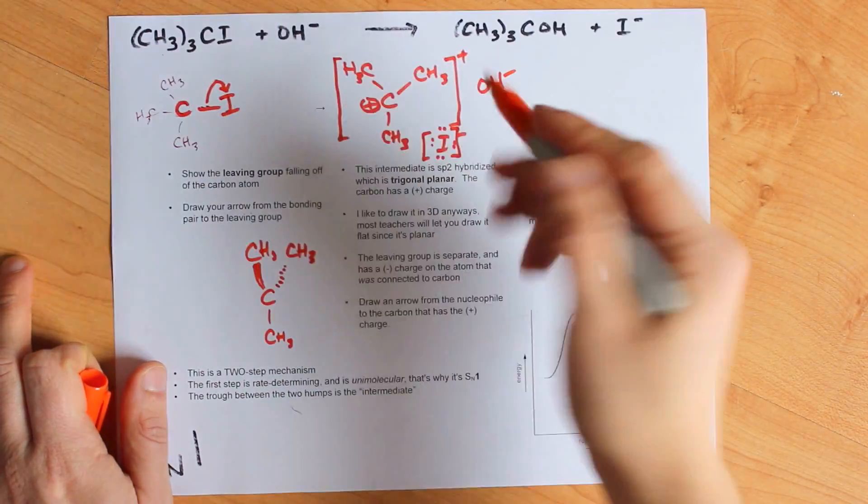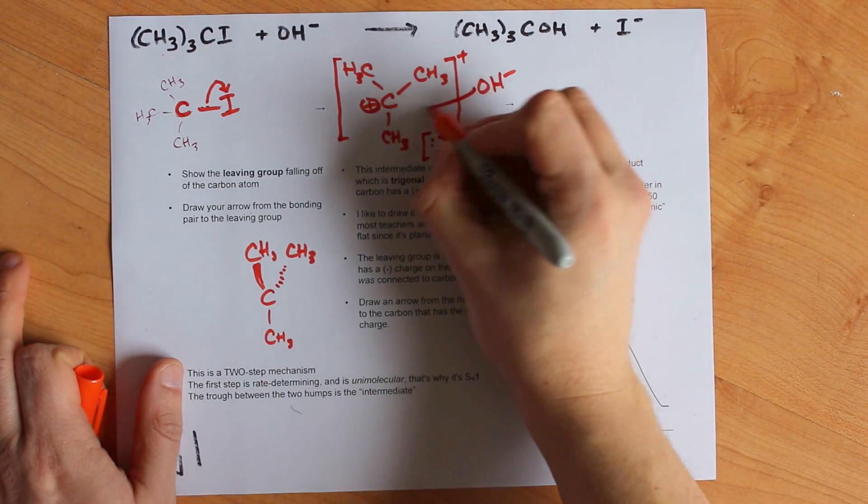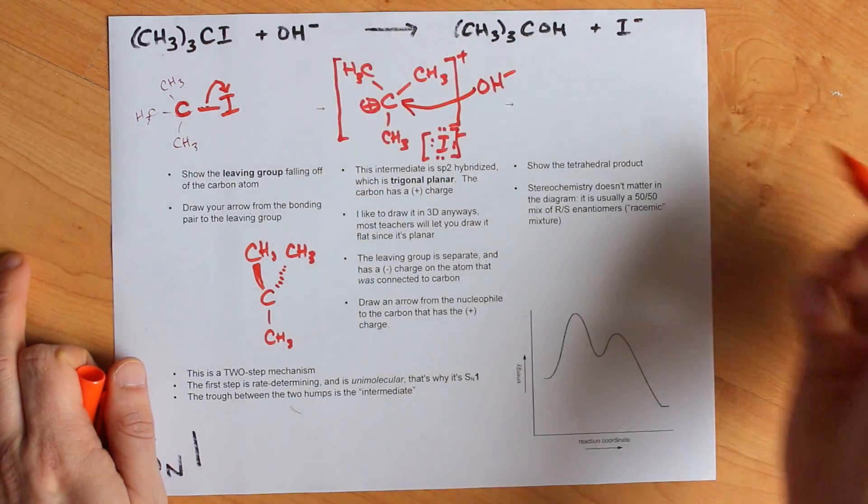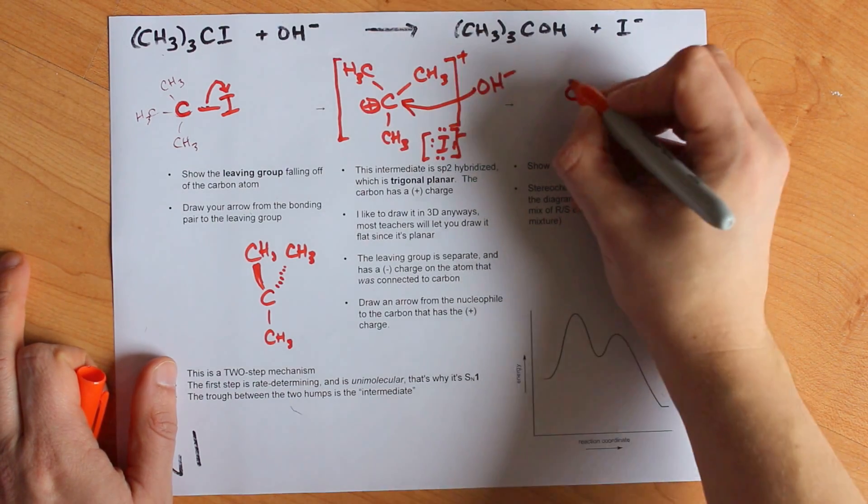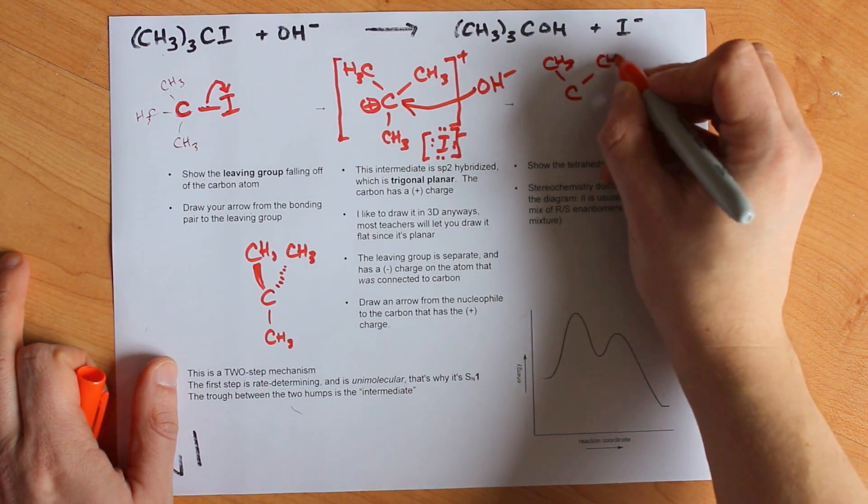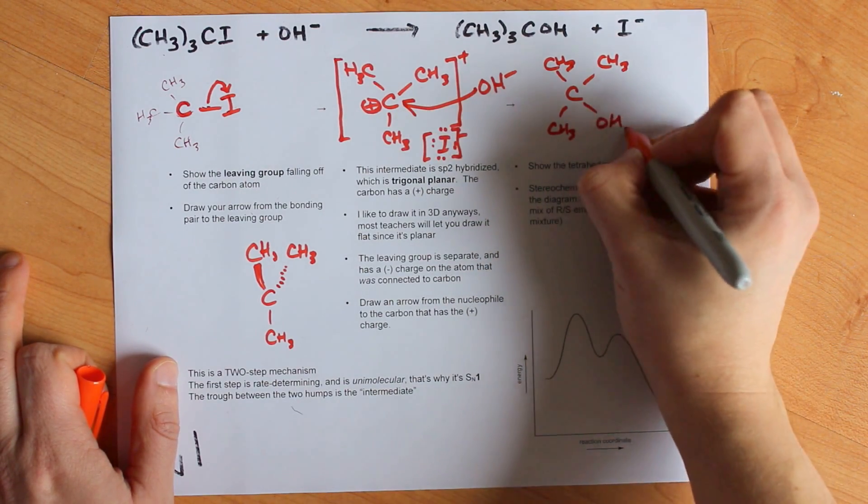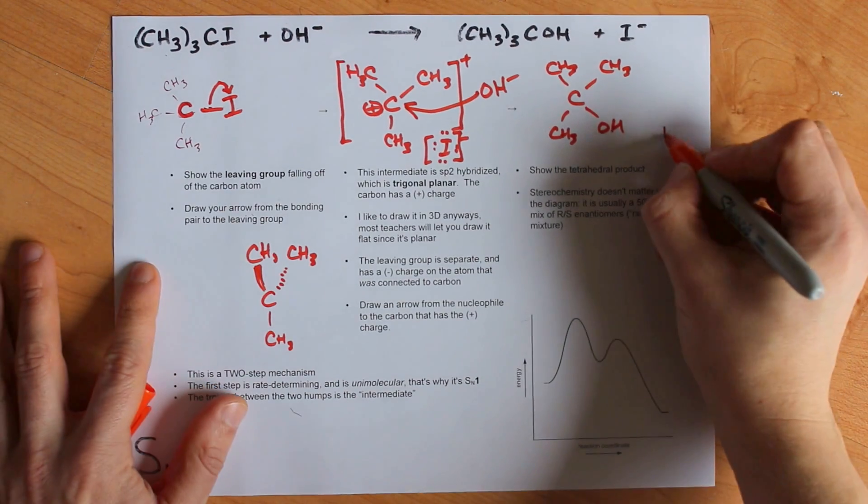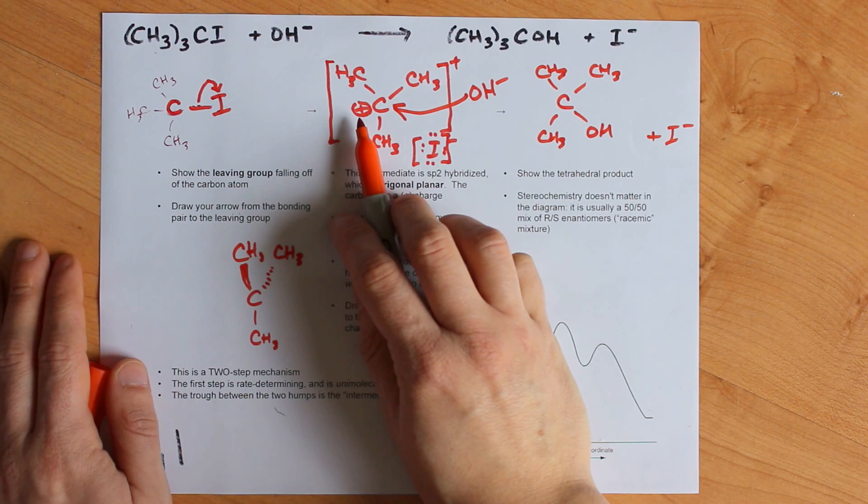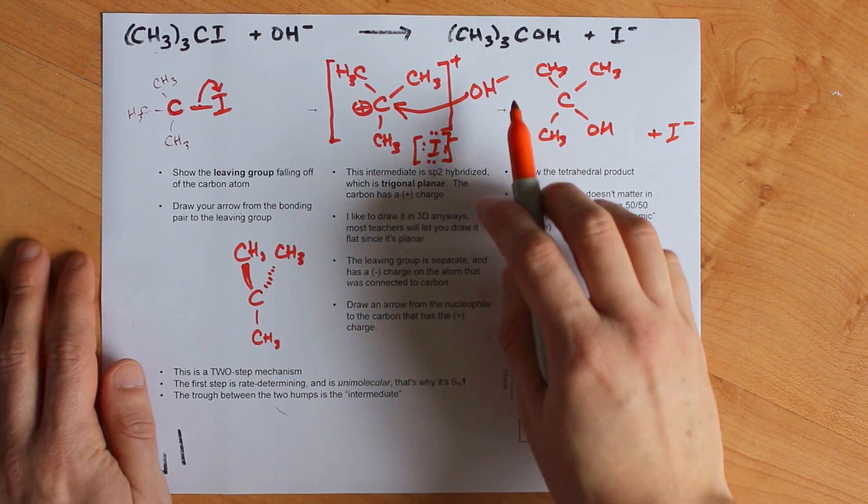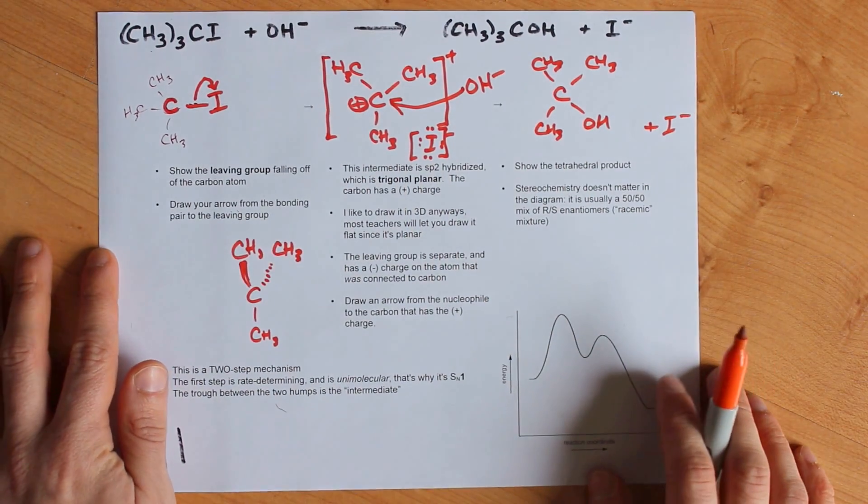In any case, the OH-, which is now a reactant in the second step, not the first step, will attack the carbocation and bond to it. So you will end up with your carbon and your three methyl groups. There's a CH3, there's a CH3, there's a CH3, and there's an OH. And the I- is right here. The minus charge of the OH combines with the positive charge of the C, and the product that is created is uncharged for that reason.